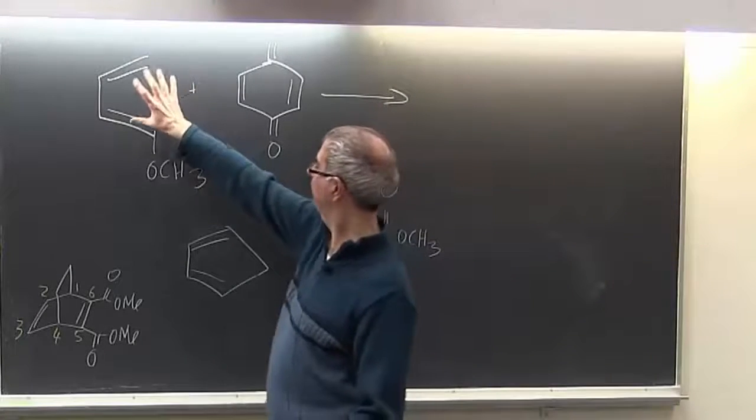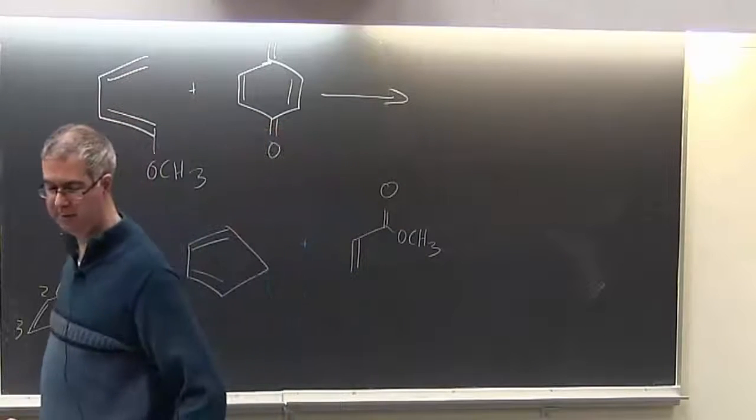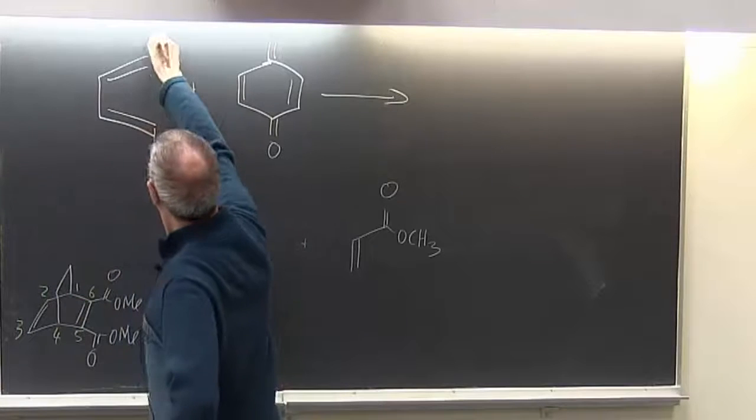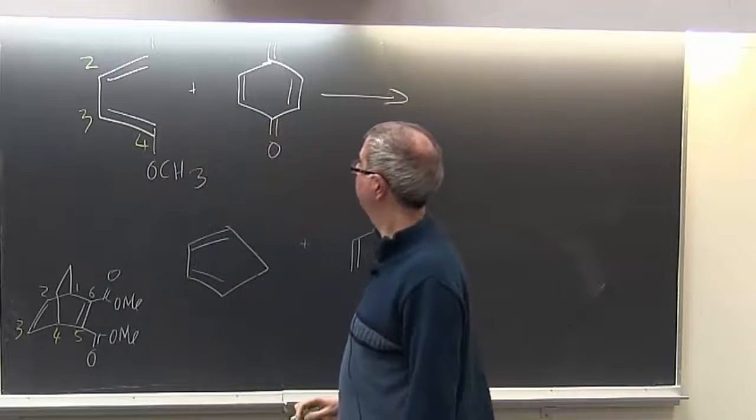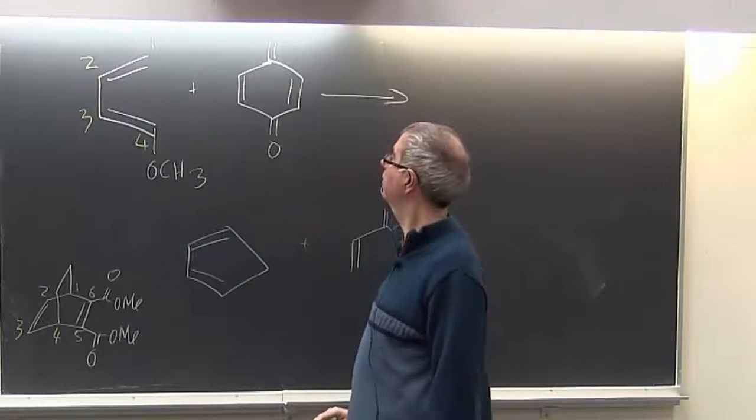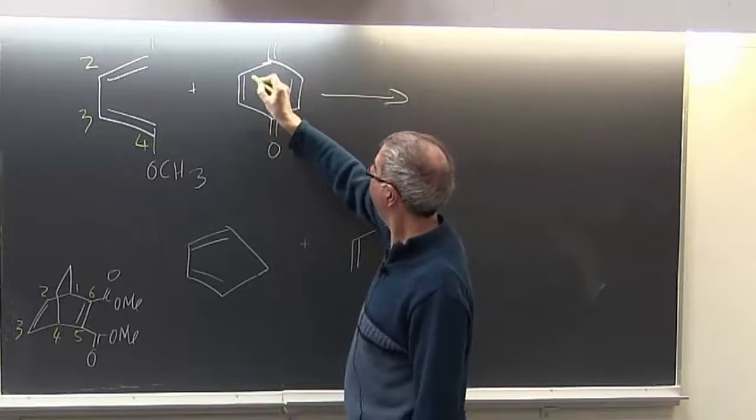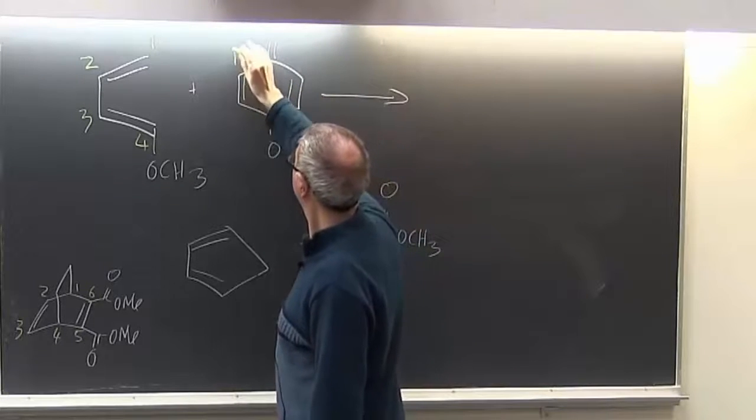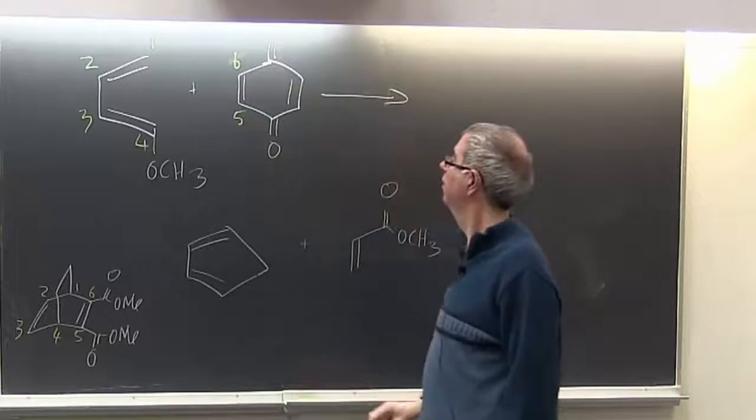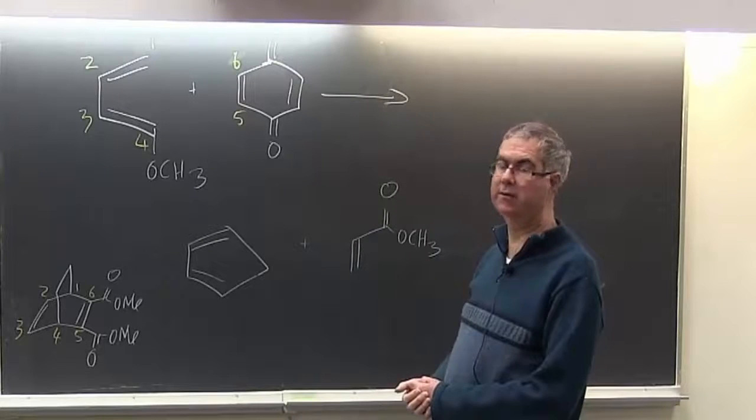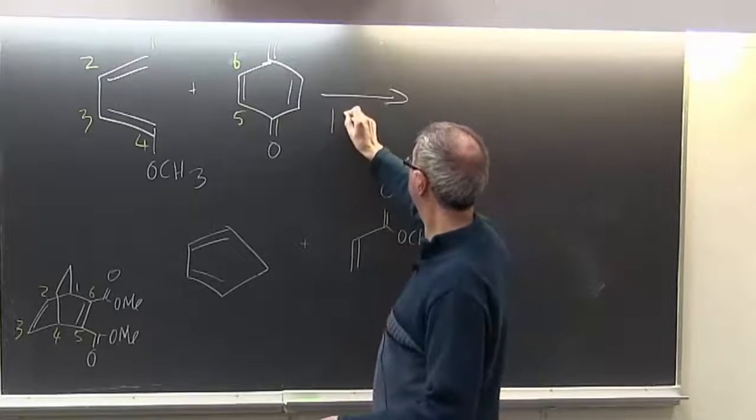All right, so here we have a simple open diene. And there are the four atoms we need to consider. And it's going to react with this dienophile. And that's going to be our atoms five and six. Now, I'm assuming that these are going to be in a one-to-one ratio.